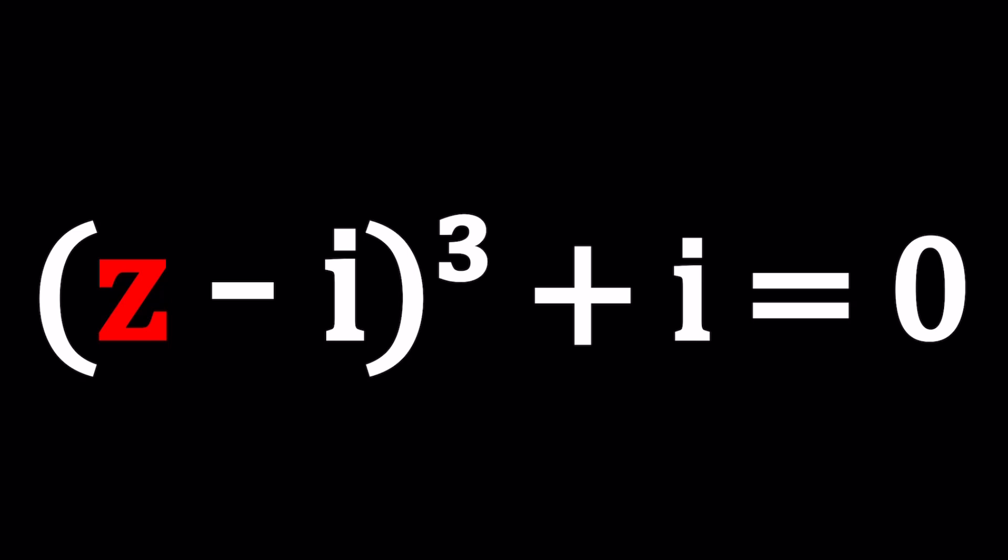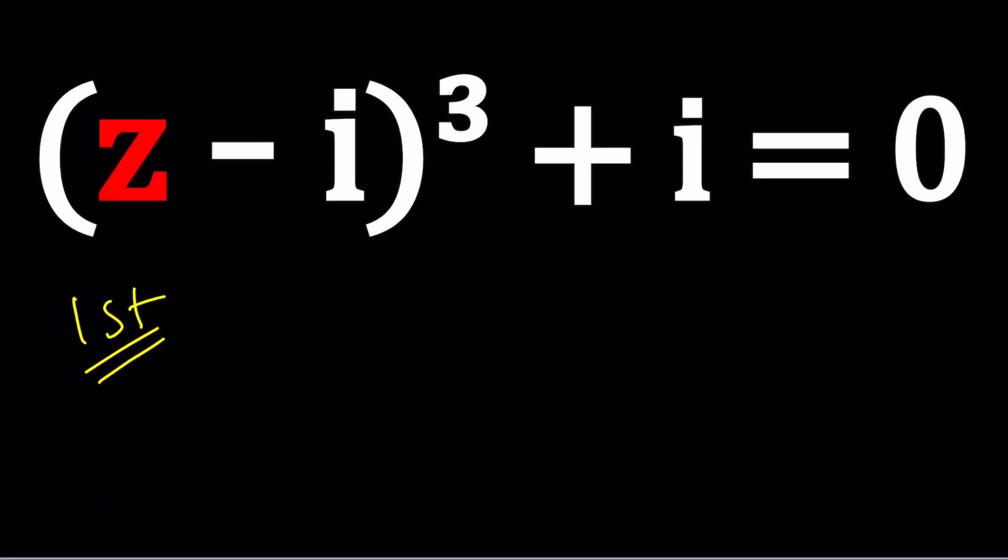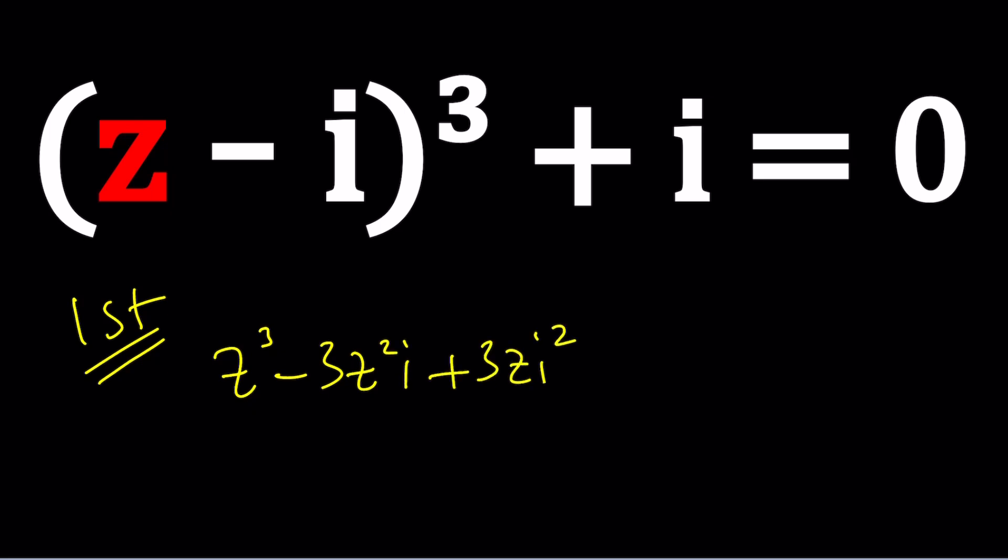I'll be presenting probably two methods. Let's start with the first one. For my first method I want to expand everything. z cubed minus 3z squared i plus 3zi squared minus i cubed plus i equals 0.